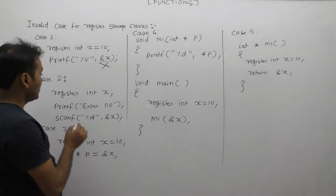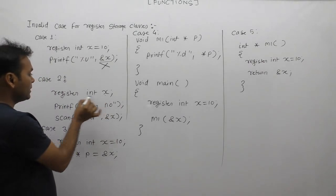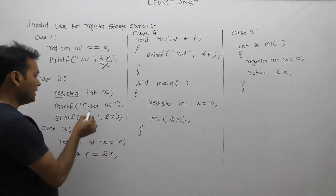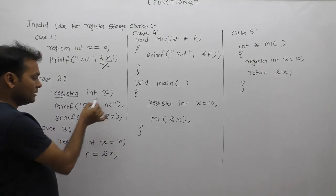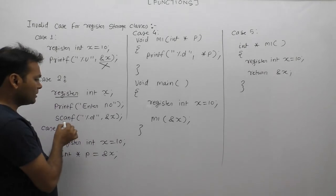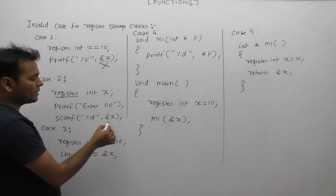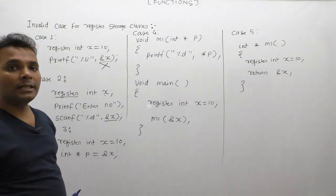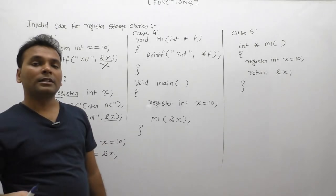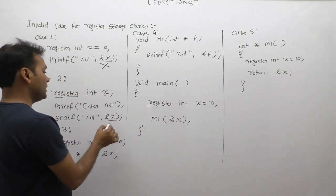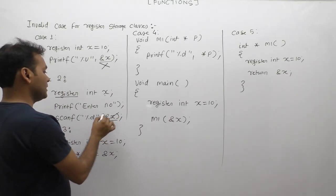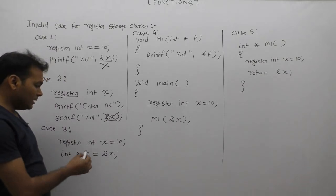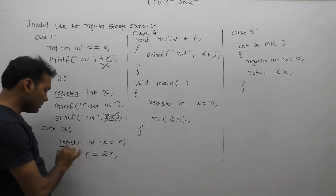In Case 2, variable X has storage class register. In this case we are reading a value for X using scanf. As we know, scanf requires the address of the variable, and since we cannot supply the address of a register variable, it is again an invalid case.